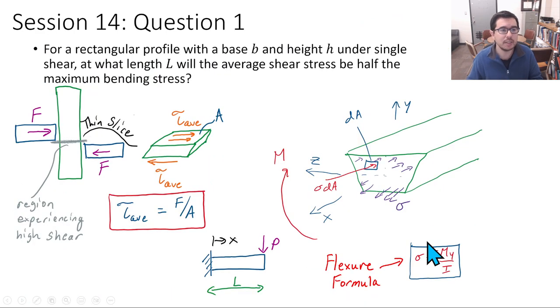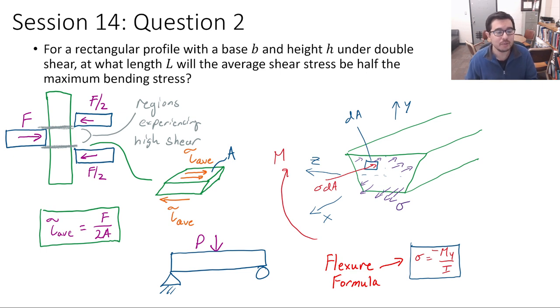We have a couple questions now to further expand our knowledge based on what we've had in this session. We're going to look at a rectangular profile with a base B and height H under single shear. The question is, at what length L would the average shear stress be half the maximum bending stress? We're going to be looking at the flexure formula and similarly do the same thing, but look at what condition needs to be met for L such that the average stress is half the maximum bending stress.